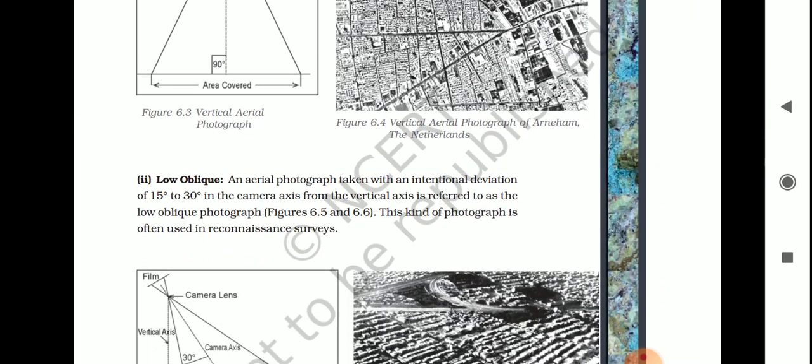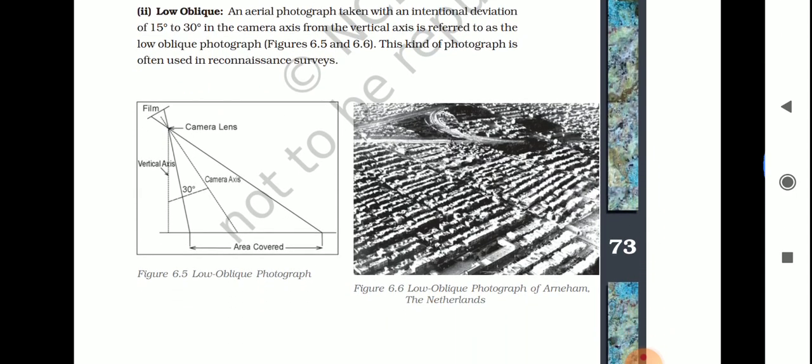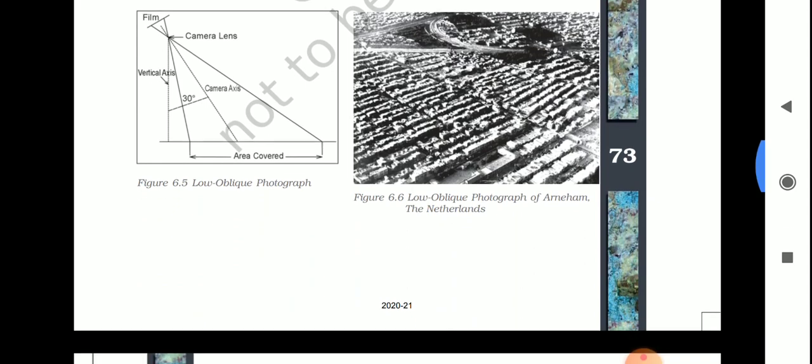In a low oblique aerial photograph, the camera axis is intentionally deviated 15 to 30 degrees from the vertical axis — this is called the low oblique photograph. This photograph is often used in reconnaissance survey; these kinds of photographs are especially used for survey purposes.